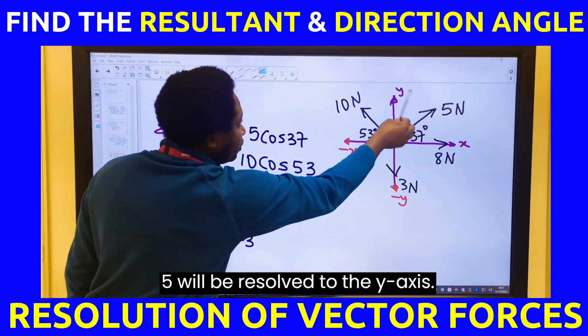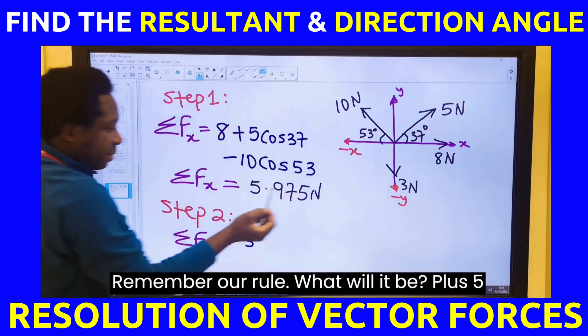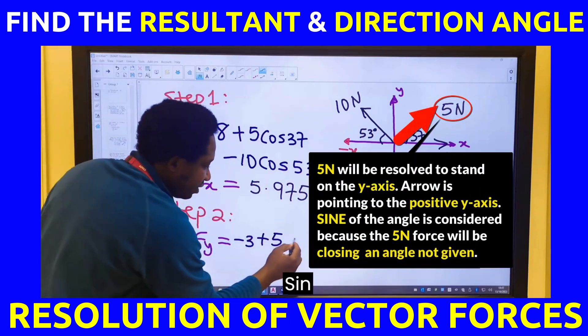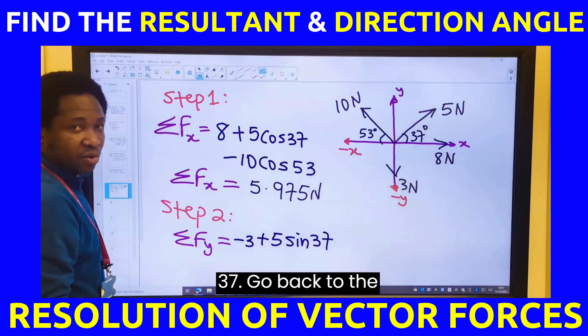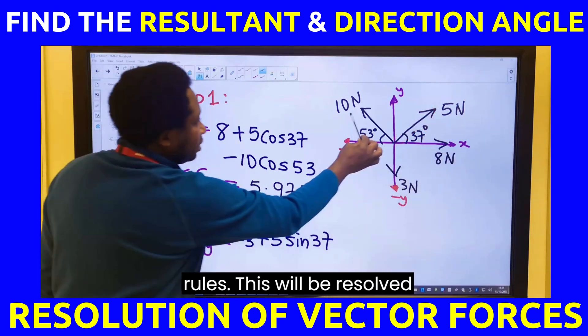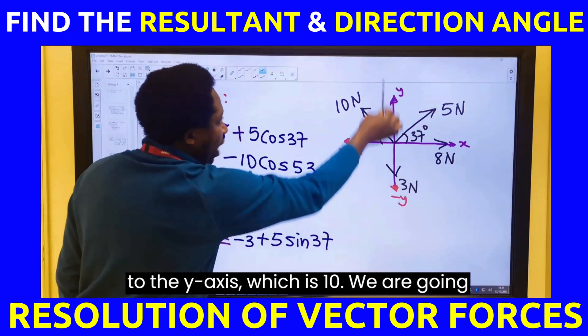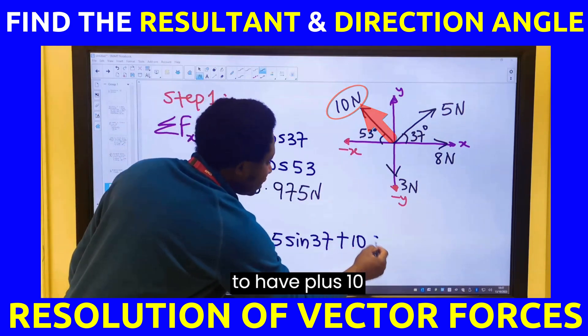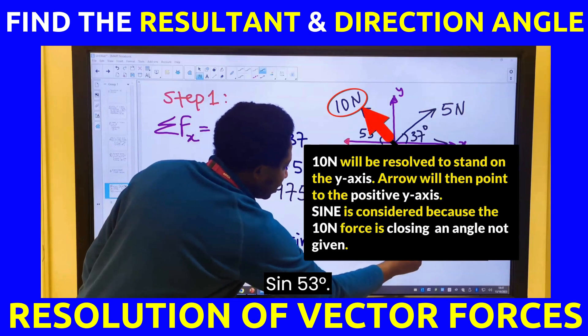5 will be resolved to the y-axis. Remember our rule. What will it be? Go back to the rules. This will be resolved to the y-axis, which is 10. We are going to have plus 10 sin 53 degrees.